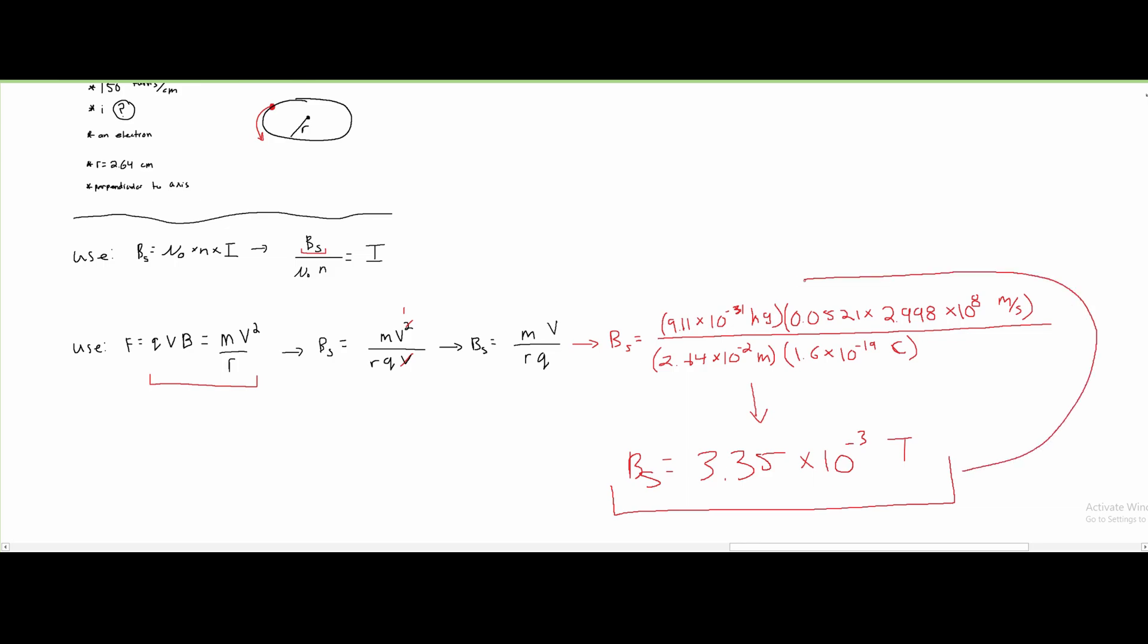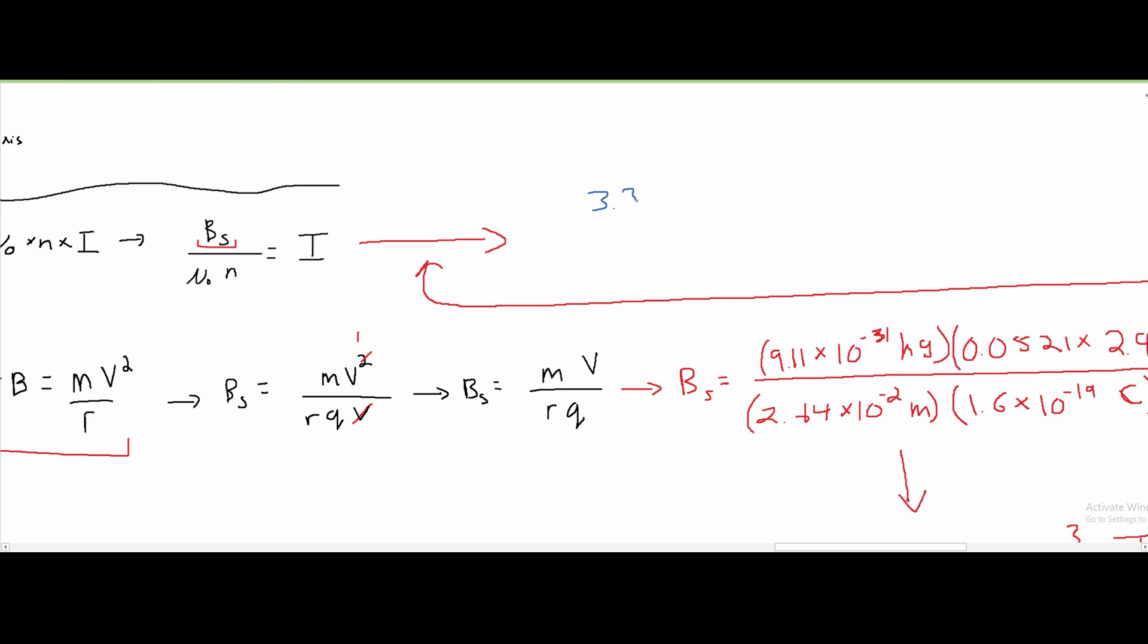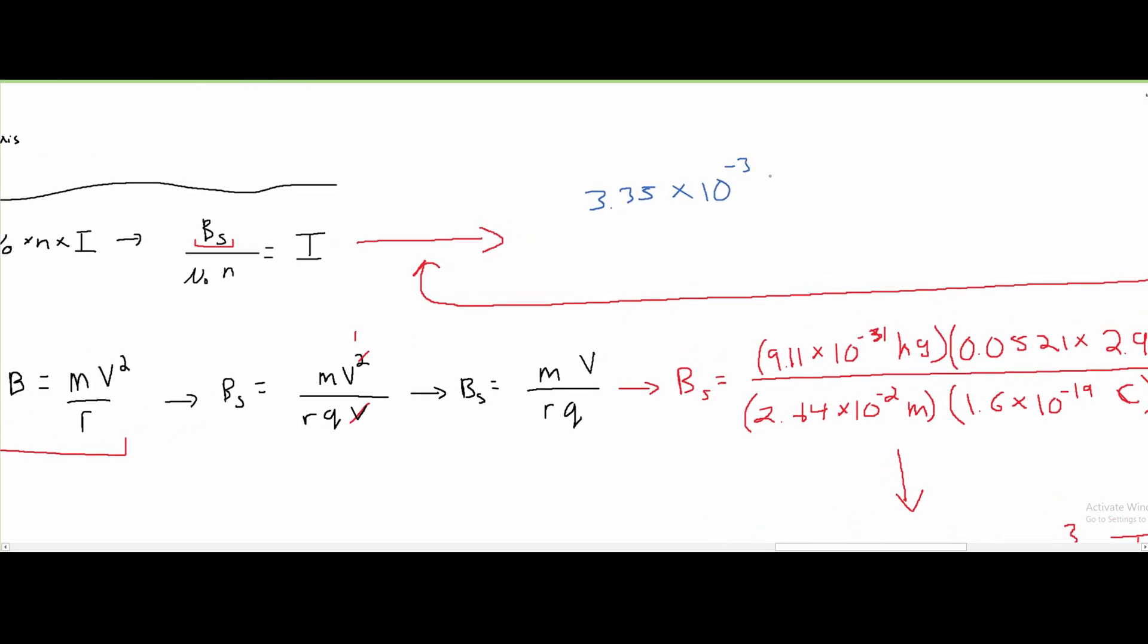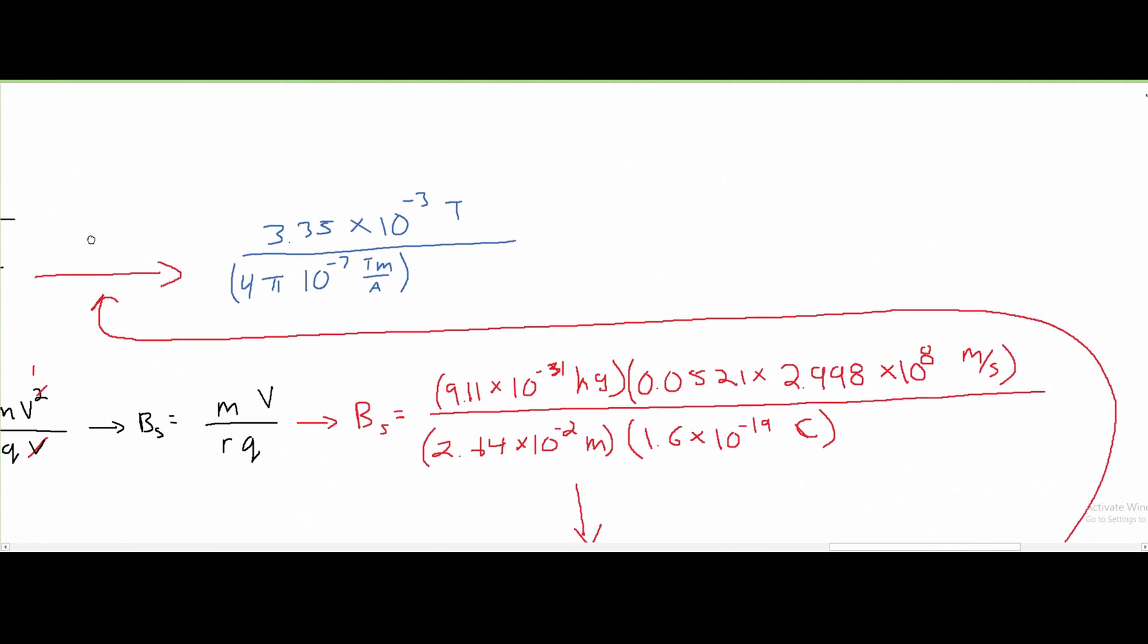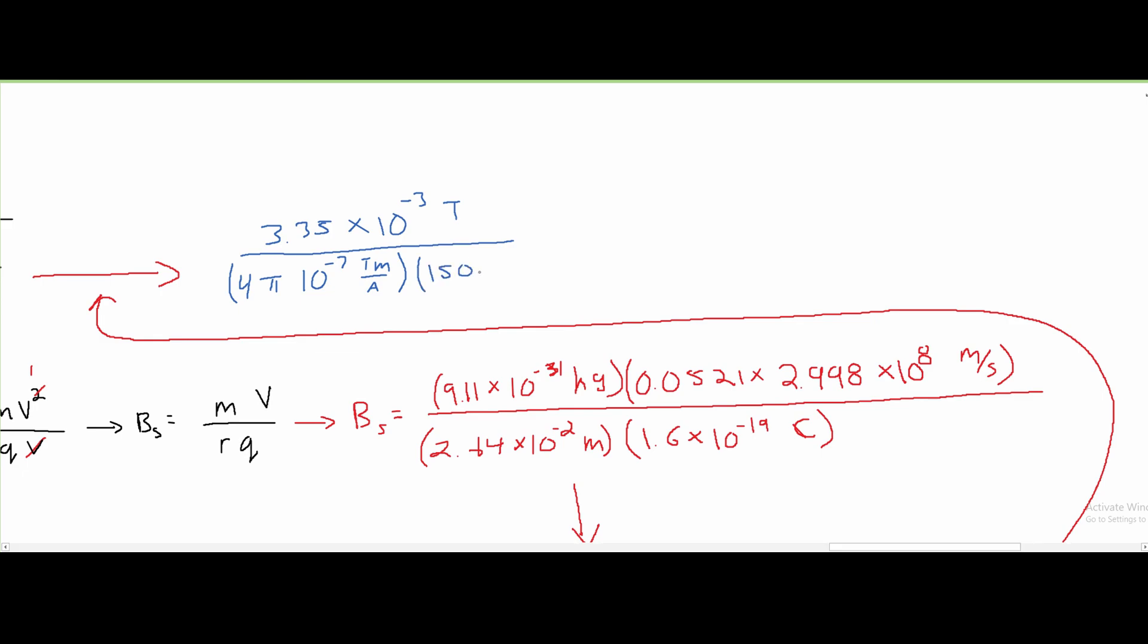Now we can take this and plug it back in here. So on our numerator now, we're going to have 3.35 times 10 to the negative 3 teslas. And this is being divided by our U naught, which is 4 pi times 10 to the negative 7 tesla meters over amps. And this is being multiplied by our number of turns. And our number of turns given here is 150, and we have to convert this to meters, so it's actually going to be 150 times 1 over 10 to the negative 2 turns.